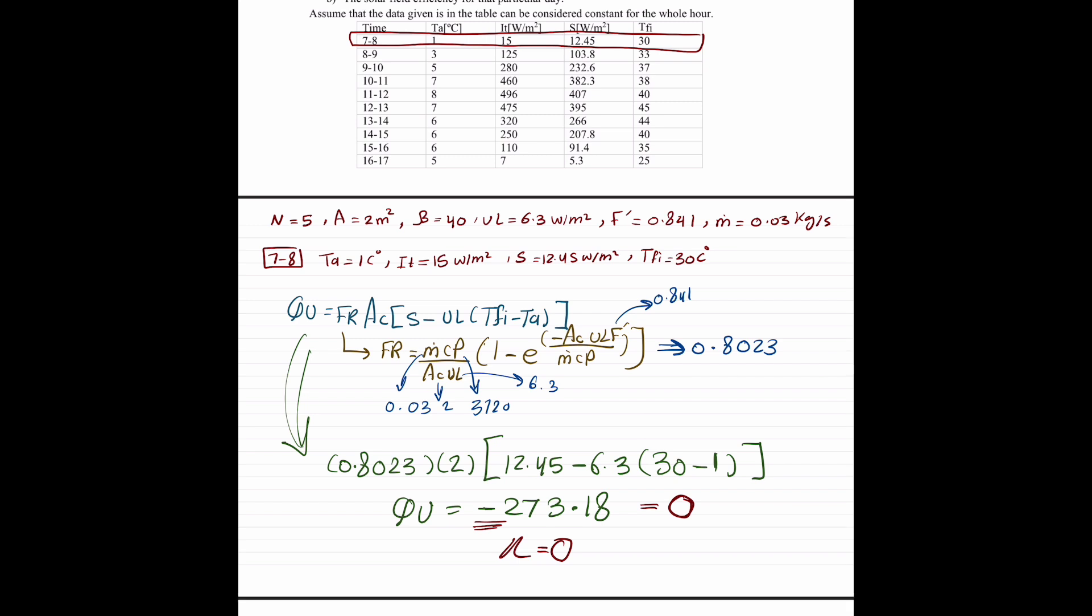First, you have this rule. Check, this is a tip. Check if S is less than UL times TI minus TA.